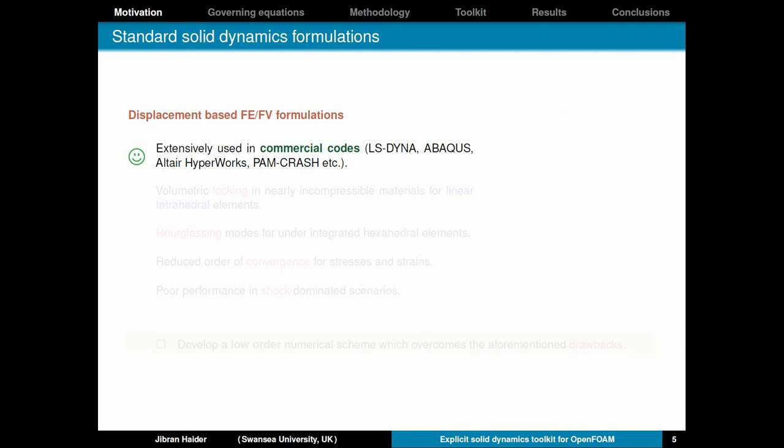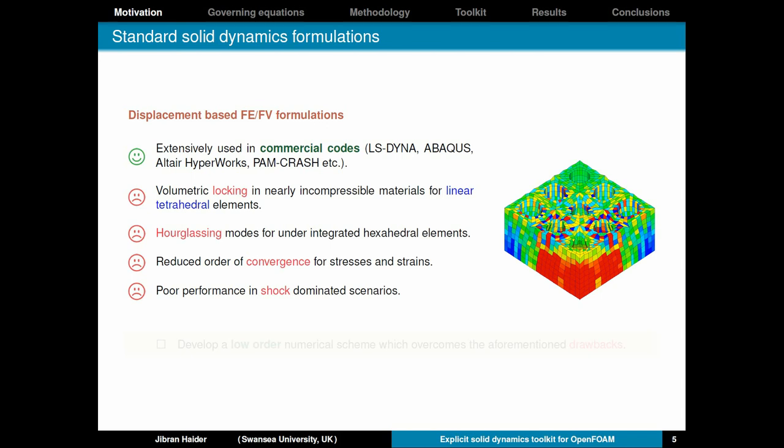So what have we got in terms of the available technology to solve these problems? We have the standard displacement based finite element and finite volume formulations which are extensively used in commercial software packages. All of these come with some intrinsic drawbacks such as when linear tetrahedral elements are employed. We suffer from volumetric locking in nearly incompressible materials. It also leads to hourglassing modes for under integrated hexahedral elements. Thirdly since stresses and strains are derived variables their order of convergence is one order less than that of displacements which are the primary variables. And finally they suffer from poor performance in shock dominated scenarios. So our objective is to develop a low order numerical scheme which is capable of overcoming all these drawbacks.